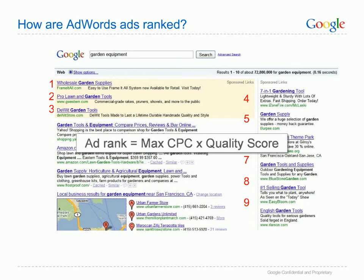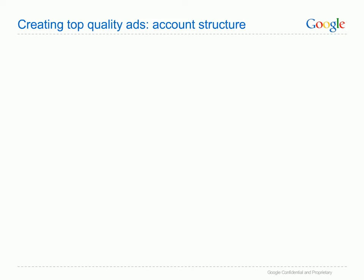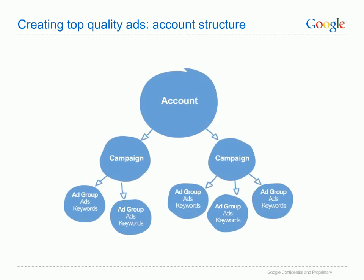Quality score is determined by a number of factors and is dynamic, so it changes over time. This means you have freedom to constantly improve your account, to learn from what works and improve your quality to make your AdWords account as successful as possible. How do you create quality advertising? The first step is to make sure your account is organised correctly. This structure enables you to really target your advertising and make your ads specific and relevant.